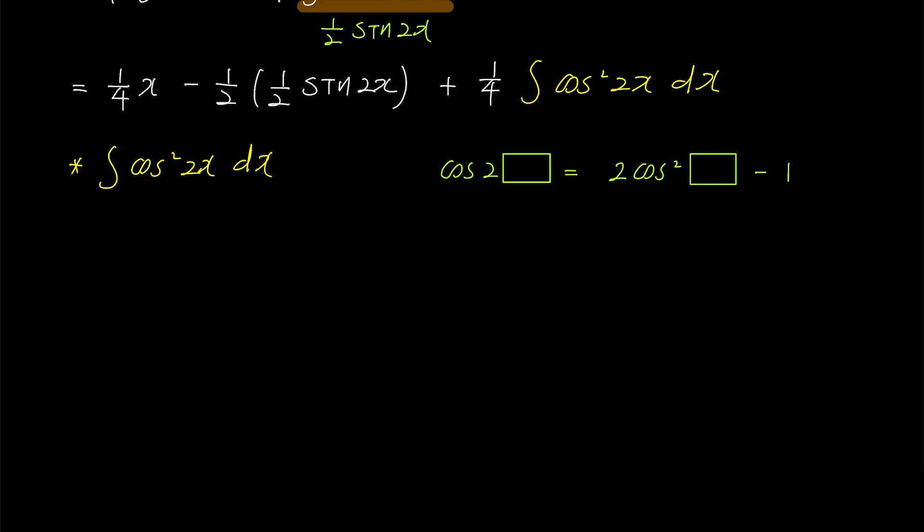Absolutely. By substituting 2x into the box, cosine 2 times 2x becomes 2 cosine squared 2x minus 1, which ultimately leads to cosine 4x equals 2 cosine squared 2x minus 1.